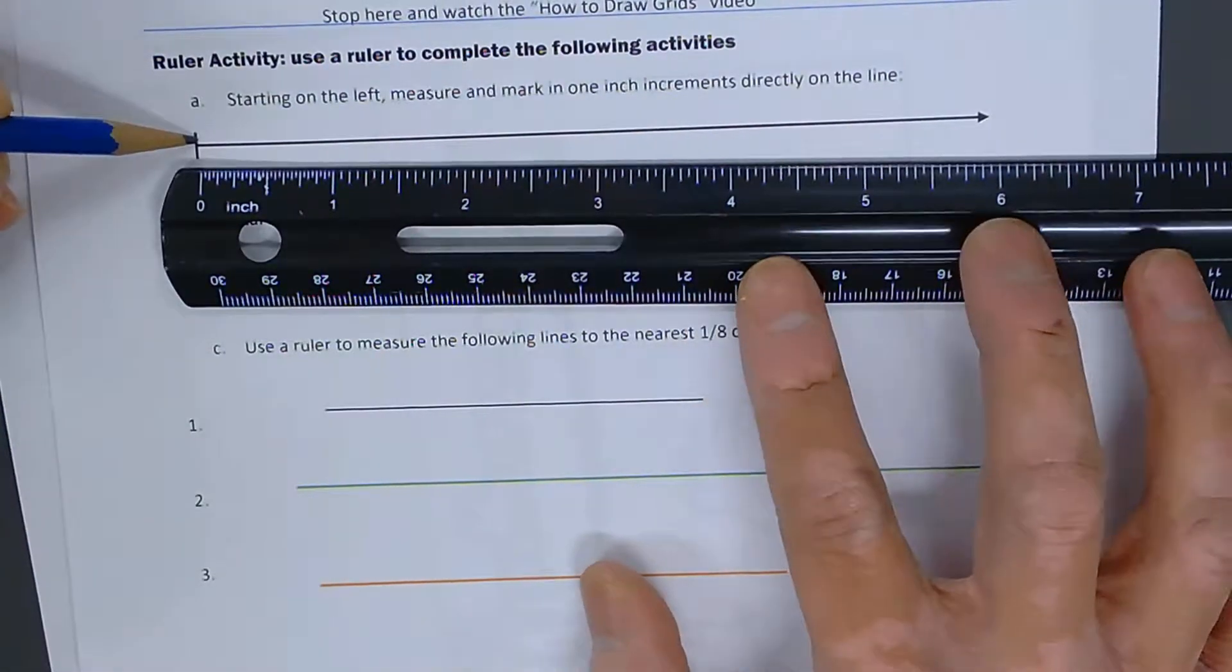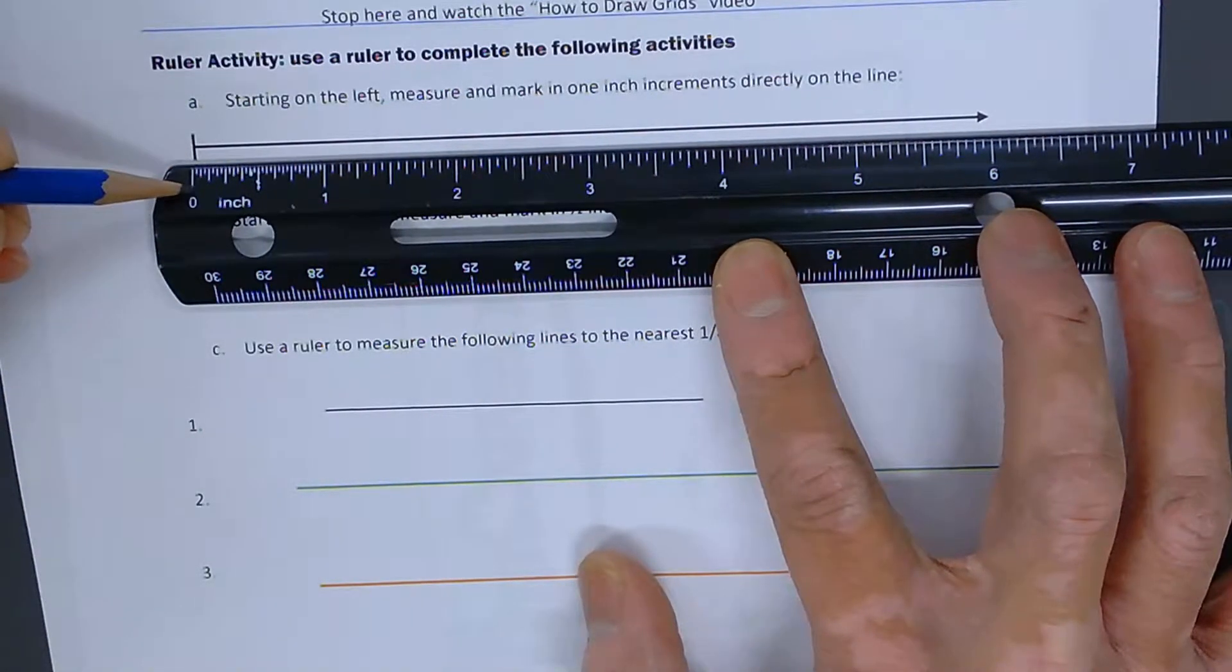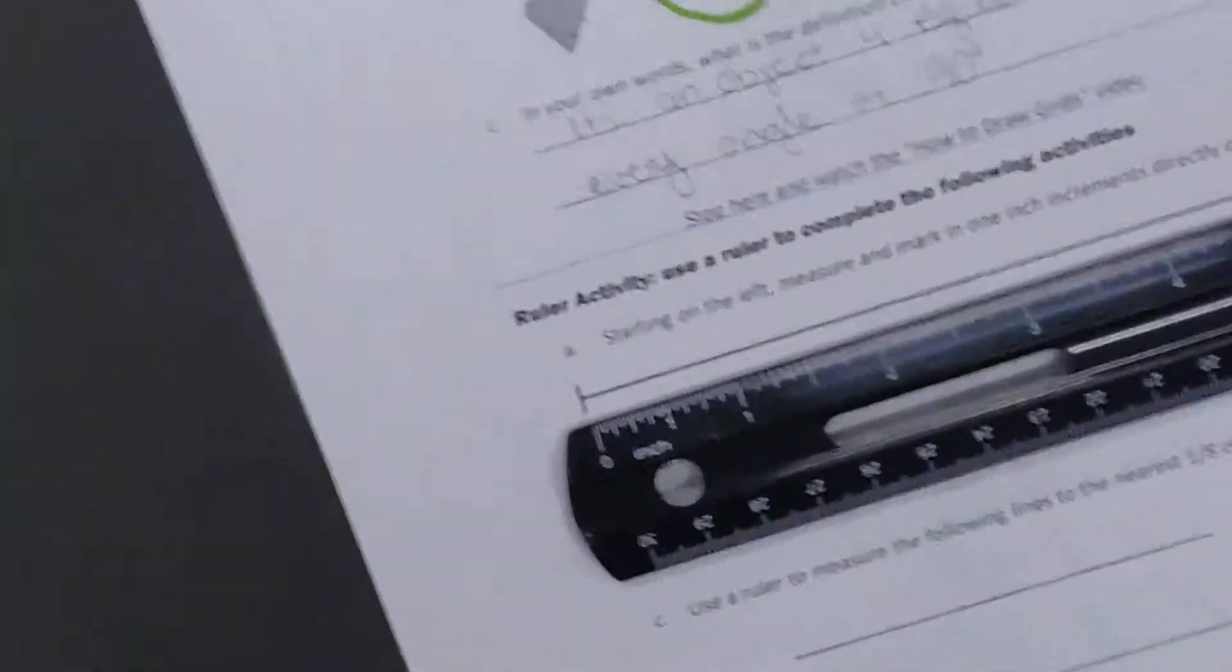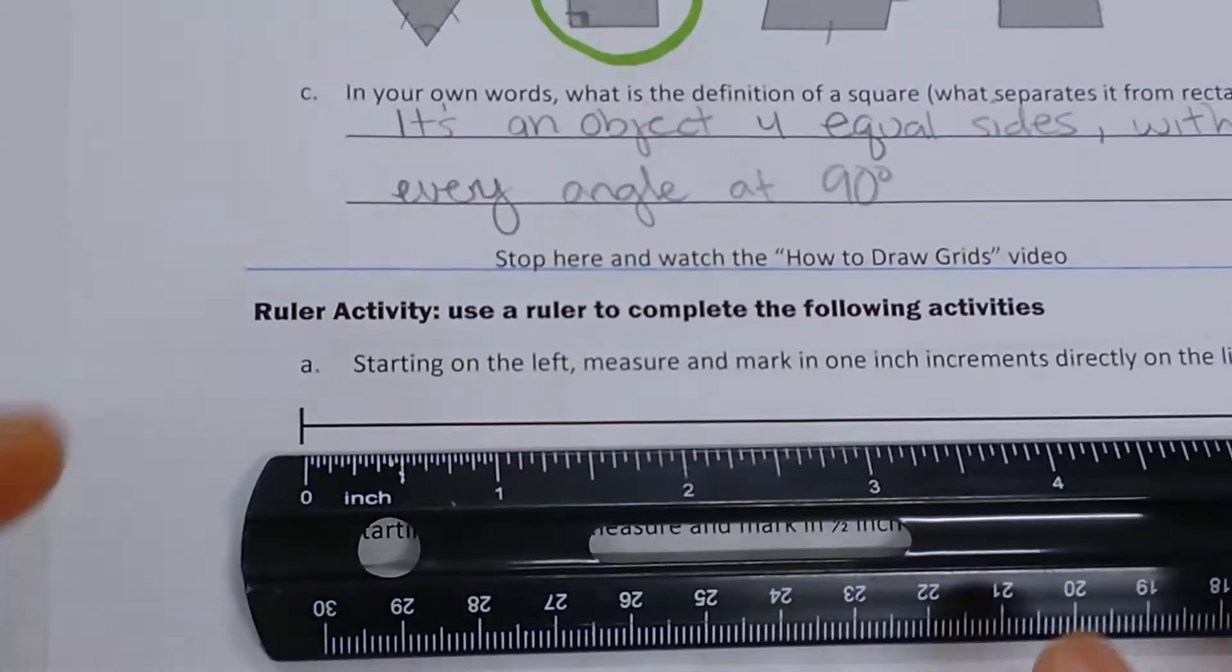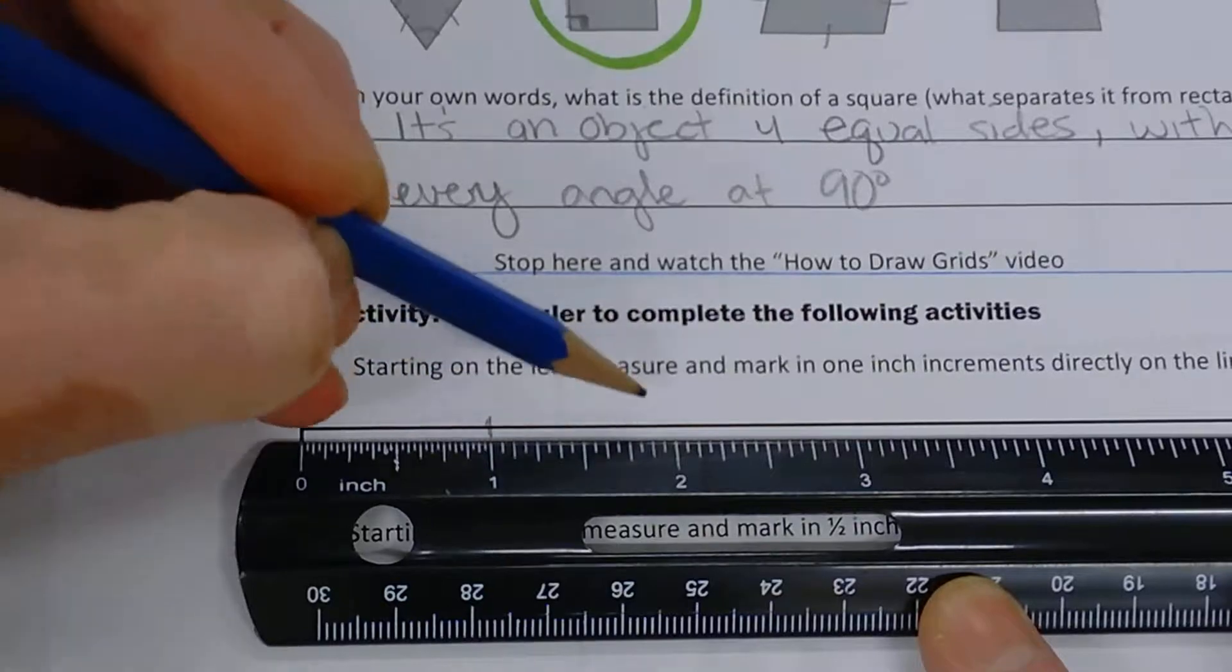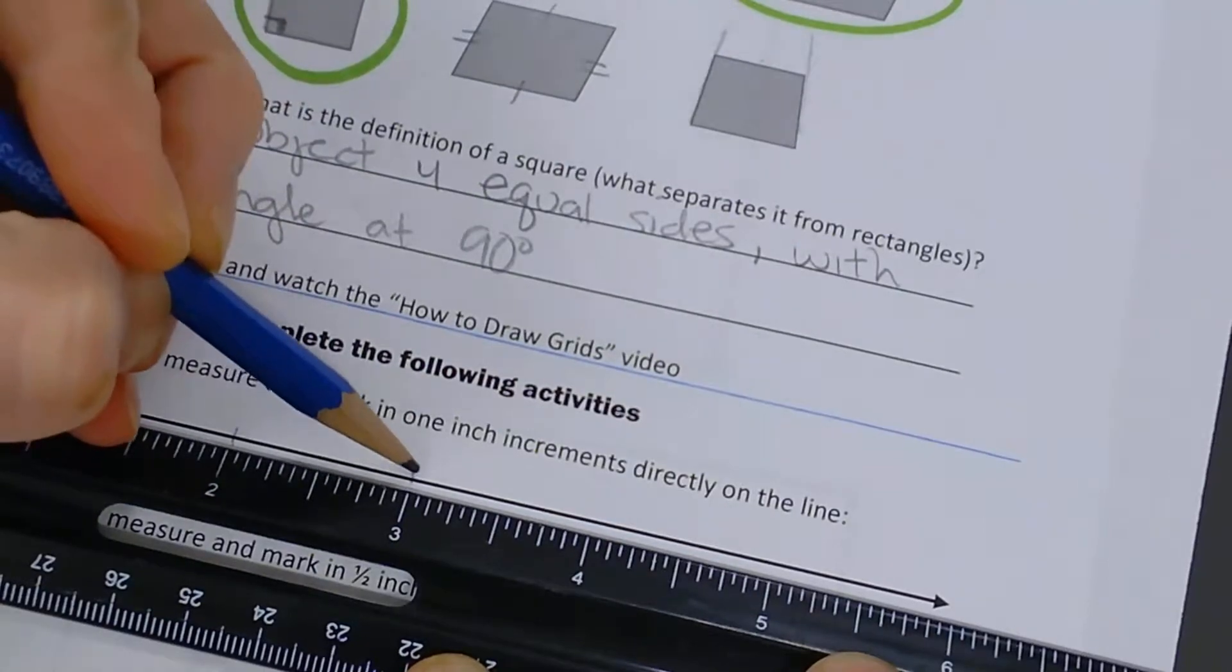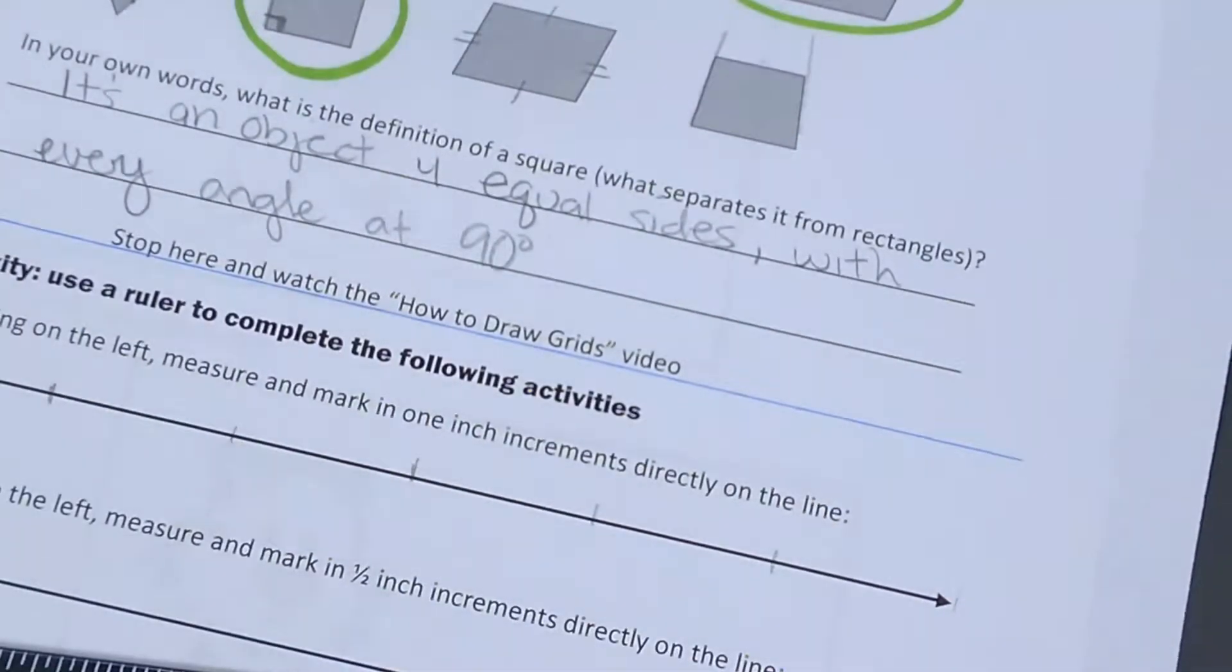It says starting on the left, which is right here, measure and mark in one-inch increments. Notice how this line and that line, one connects it to the other. That's because that's my starting point. It says mark in one-inch increments. I'll mark the one and the two. The best way to get this accurate is to hover your nose over the top of the number. Three, four, five. And the six is off the page, so you don't actually have to mark that.